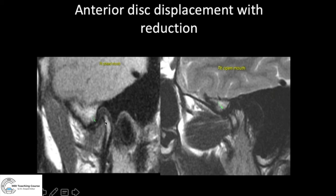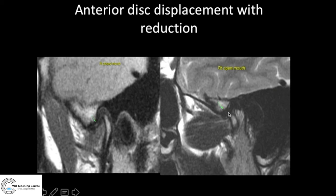In this closed mouth position, you can see the mandibular condyle and the disc is obviously dislocated anteriorly — there is disc displacement. The next question is: what happens on open mouth? Does the disc return to its normal position with the mandibular condyle? Here in the open mouth position, the disc shows a normal relation to the mandibular condyle. So this is anterior disc displacement with reduction — displaced in closed mouth, regained normal position in open mouth, because the retrodiscal tissue is still maintained. This is considered minor derangement.